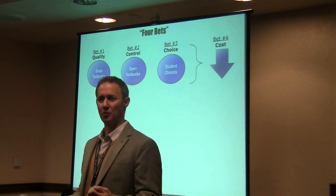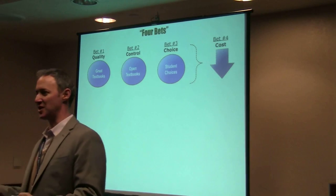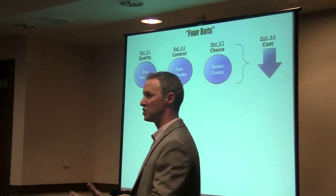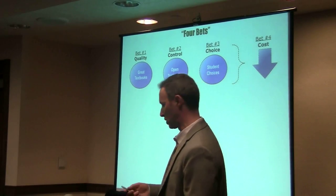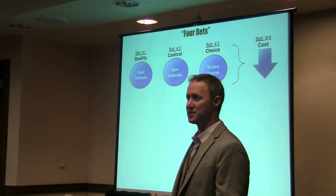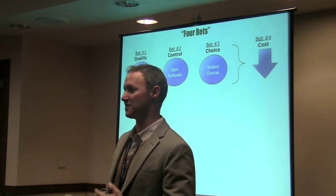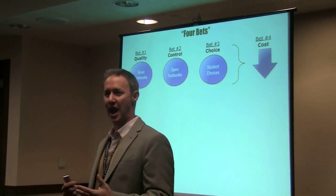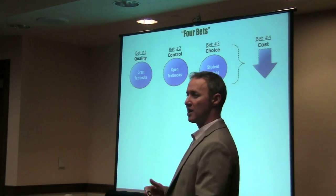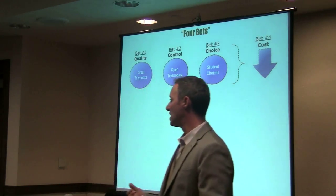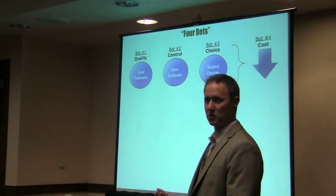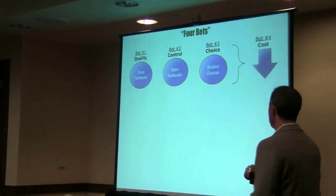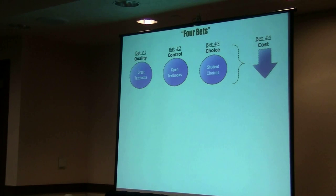The second bet was control — faculty wanted control. They are the local expert; they know their students, the topic, and the subject. If you could pass legal and practical control for them to manipulate, adapt, and change a textbook, you'd lead to a more relevant and better learning product. The third bet is that students wanted choices — some want print, some want to listen, some want to read on a device or computer. And ultimately, we could leverage innovative business models and technology to do all of that at a dramatically lower cost and solve the cost problem.